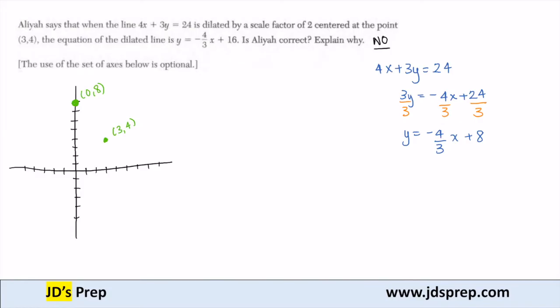And we can repeat this process. Go down another 4 and then over 3. So now I'm at (6, 0). If I connect those points, there's my original line.